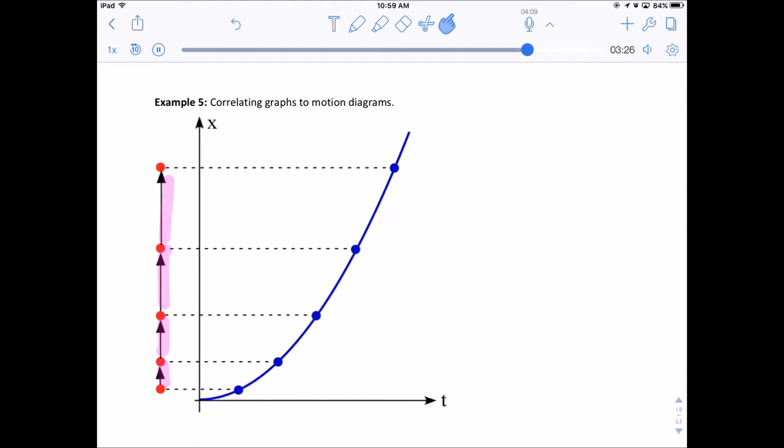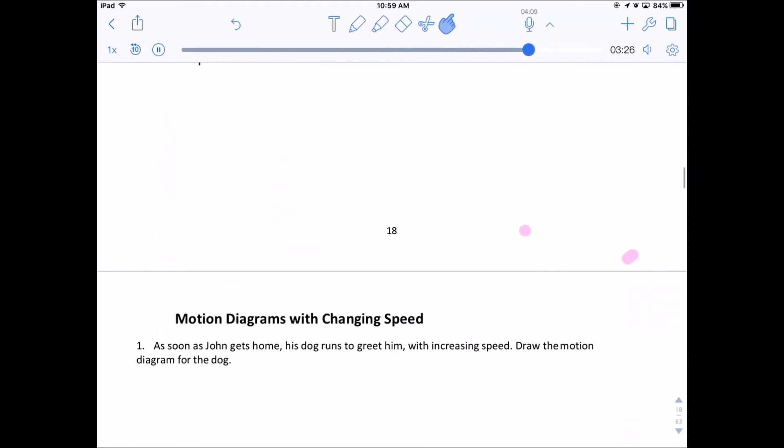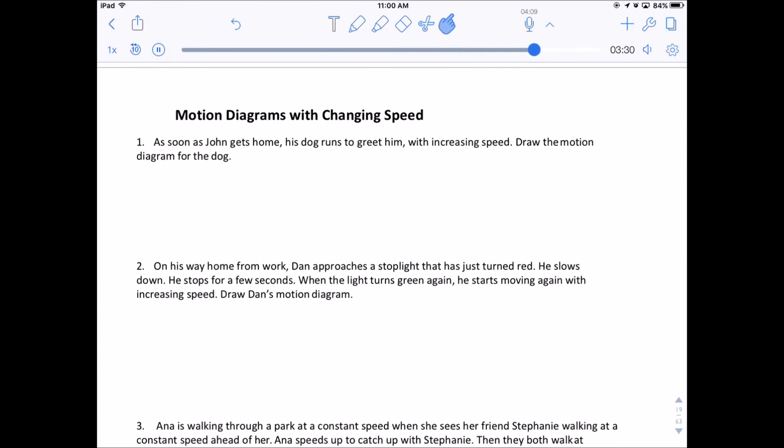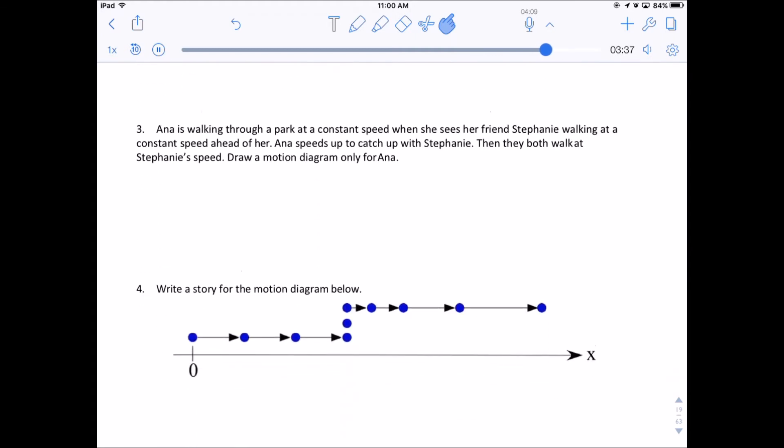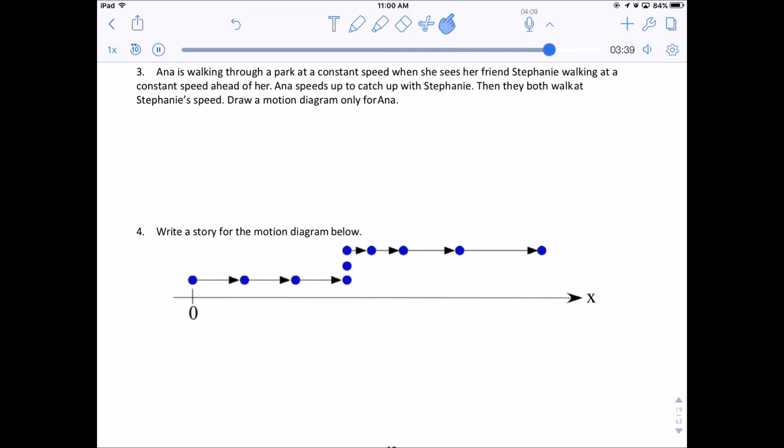So what you're going to do on this is you're going to read the description and then draw what is happening there. And then here's a motion diagram, now be careful because this is similar to what we've seen before, but you're going to just write a story that describes something that might be happening that would follow this motion diagram right there.